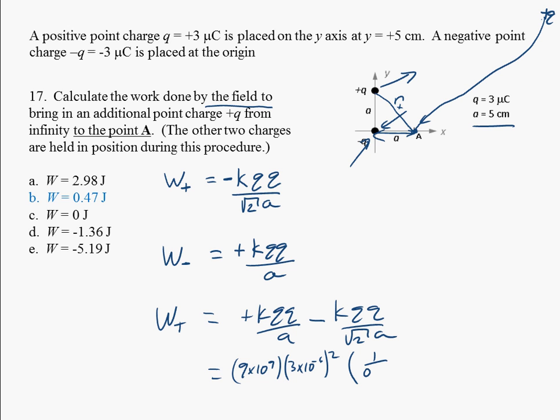so 1 over 0.05 minus 1 over the square root of 2 times 0.05. When I plug that into my calculator, I get about half a joule, which is answer B.